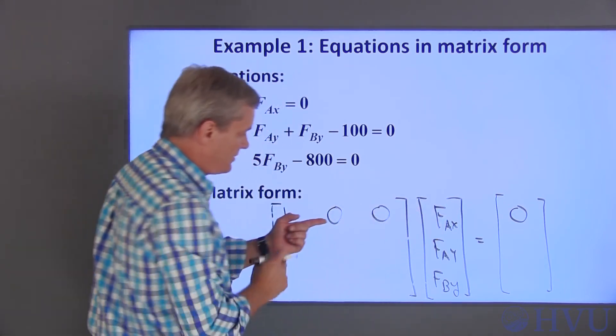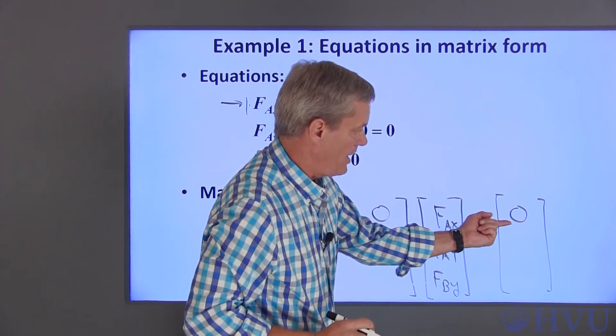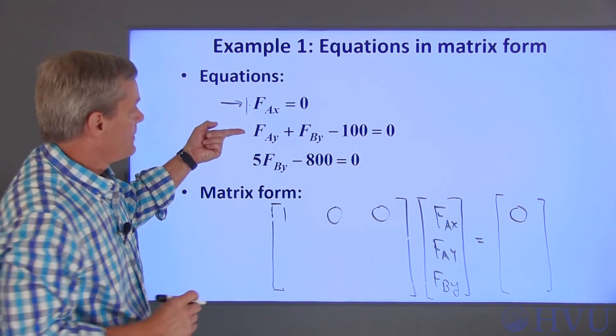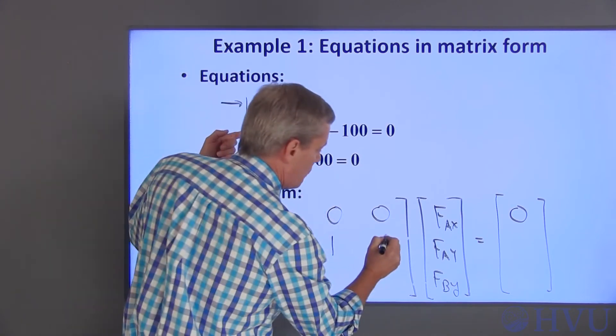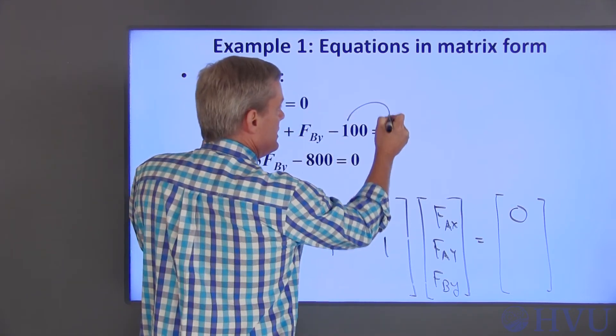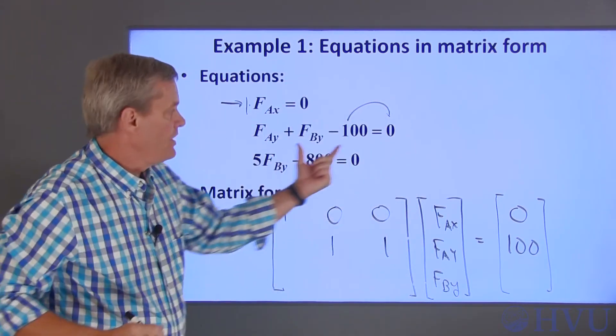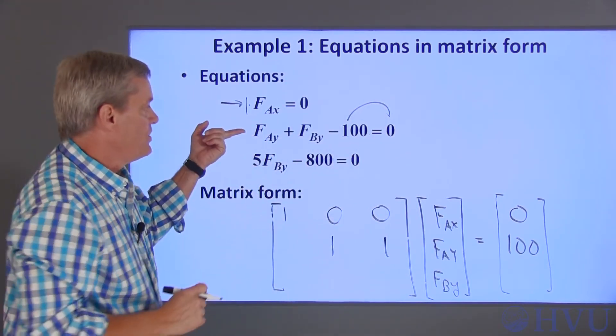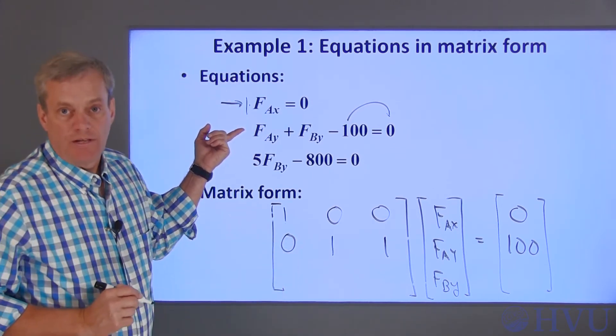The second equation is one times FAY plus one times FBY is equal to a hundred. When I move this to the other side of the equation, it changes its sign. There's no FAX in this equation. I can handle that by multiplying this by a zero.